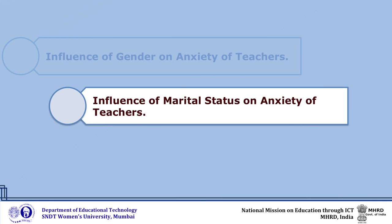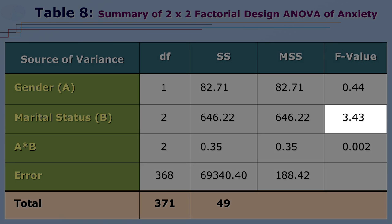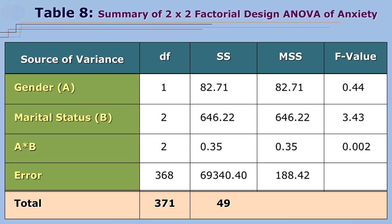Regarding the influence of marital status on anxiety of teachers: from table 8, the F-value is 3.43, which is not significant. This means the mean scores of anxiety of married and unmarried teachers did not differ significantly. Thus, the null hypothesis that there is no significant influence of marital status on anxiety of teachers is not rejected, and marital status had no influence on anxiety of teachers.